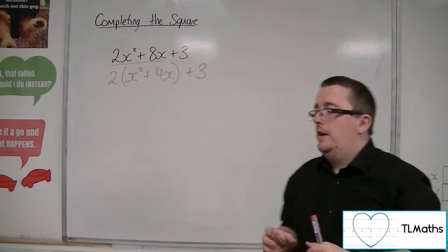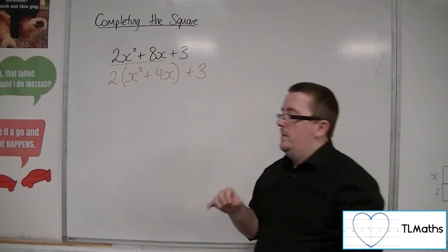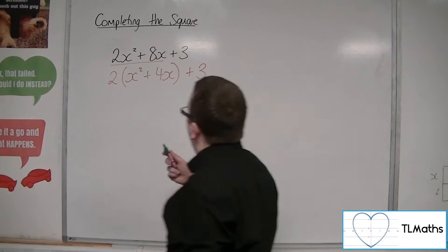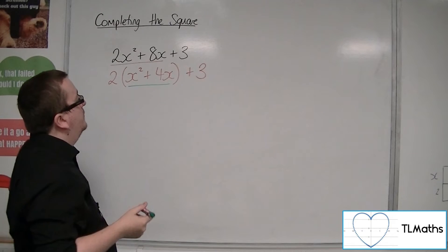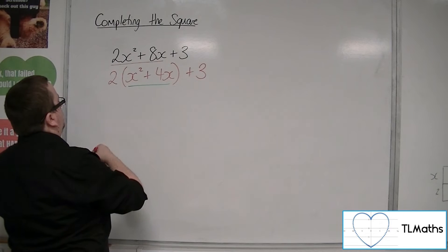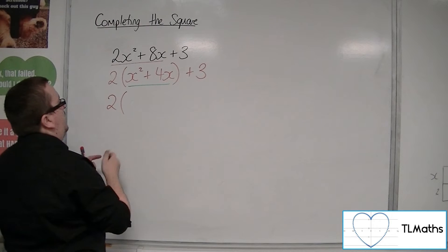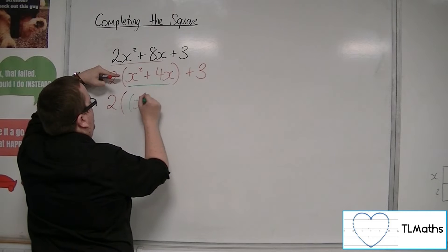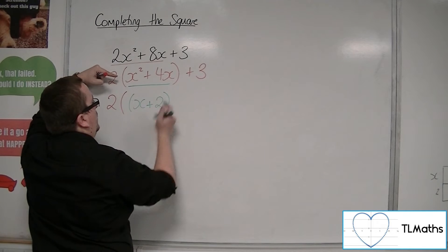So that is my first step. Now the next step that goes with it is to complete the square on what is inside that bracket. So now we've got the 2 and then open bracket, and I complete the square on what's inside. So I would have x plus 2, because that's half the 4, squared.